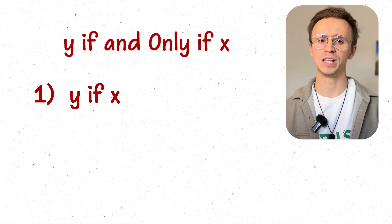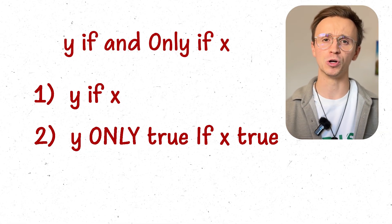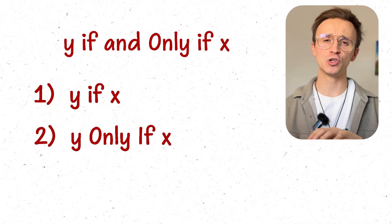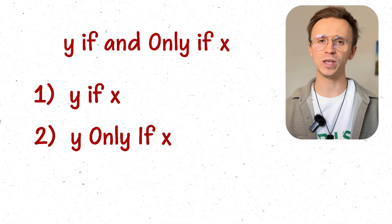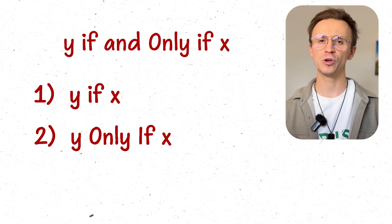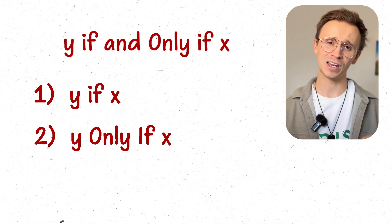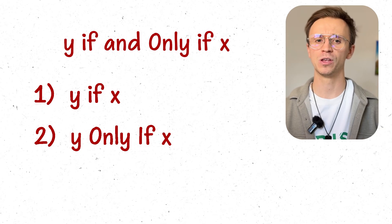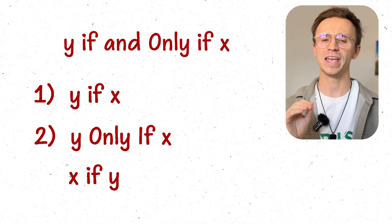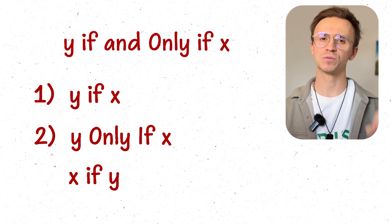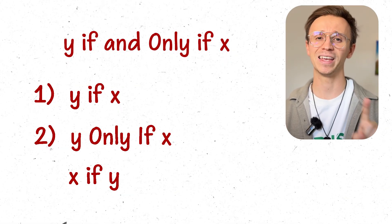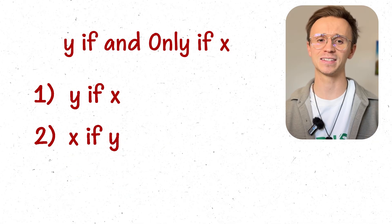The second statement is that y can only be true if x is true — y only if x. This means there is no other possible way that we can get y other than having x be true. So if we know that y is true, the only way that can happen is if x was also true. So if y is true, x must also be true. We've essentially proved it two ways: y if x, and x if y.